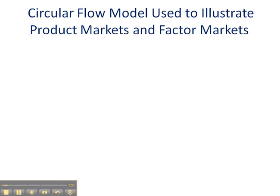Before we get started on this diagram, we really need to define both product markets and factor markets. Product markets are when firms and households exchange goods and services for revenue. That's something that we face every single day, whether we're buying shoes or laptops or CDs, or purchasing services like we do at McDonald's.